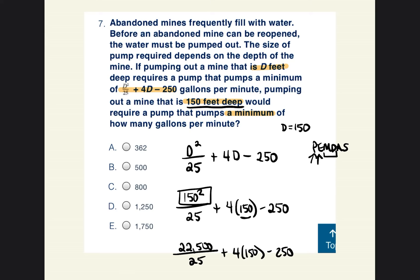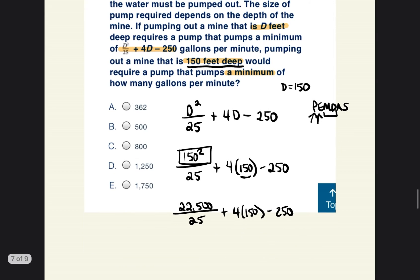Okay, so then we did exponents. Now it's multiply or divide, whichever one comes first. So 22,500 over 25. That's the same as saying 22,500 divided by 25. So right here is division. So we're going to go ahead and divide. So that is equal to 900. And we're going to go ahead and bring down the rest of the equation. Okay, so we divided and then next we would multiply. So we do 4 times 150. That's 600. And so we're going to continue to bring down the equation.